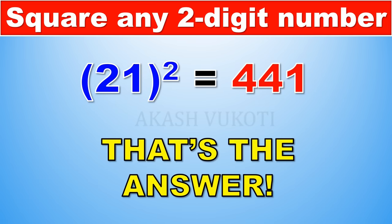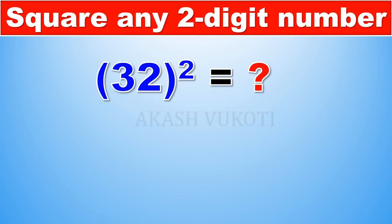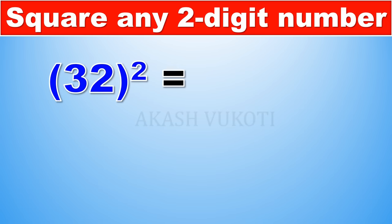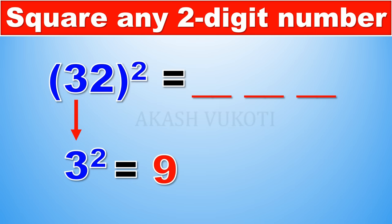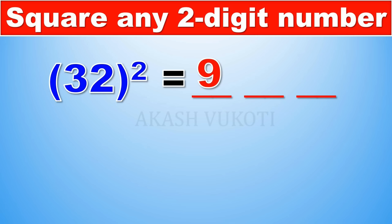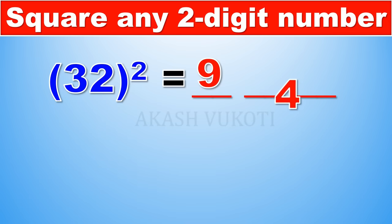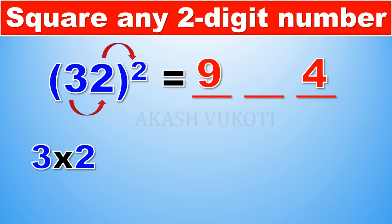Let's take a look at a slightly larger example: 32 squared. We begin by separating the answer into three parts. The first part is the square of 3, which is 9. The last part is the square of 2, which is 4.